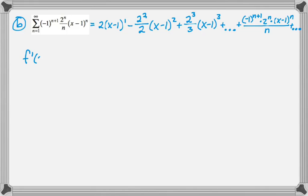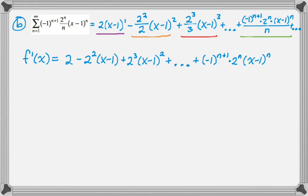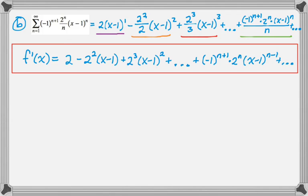Now for f′(x), I use term-by-term differentiation. The derivative of 2(x−1) is 2; the derivative of −(4/2)(x−1)² is −2²(x−1); and the derivative of (8/3)(x−1)³ is 2³(x−1)². That gives three non-zero terms. For the general term, the derivative of (x−1)^n is n(x−1)^(n−1), so bringing down the n and simplifying yields (−1)^(n+1) · 2^n · (x−1)^(n−1).